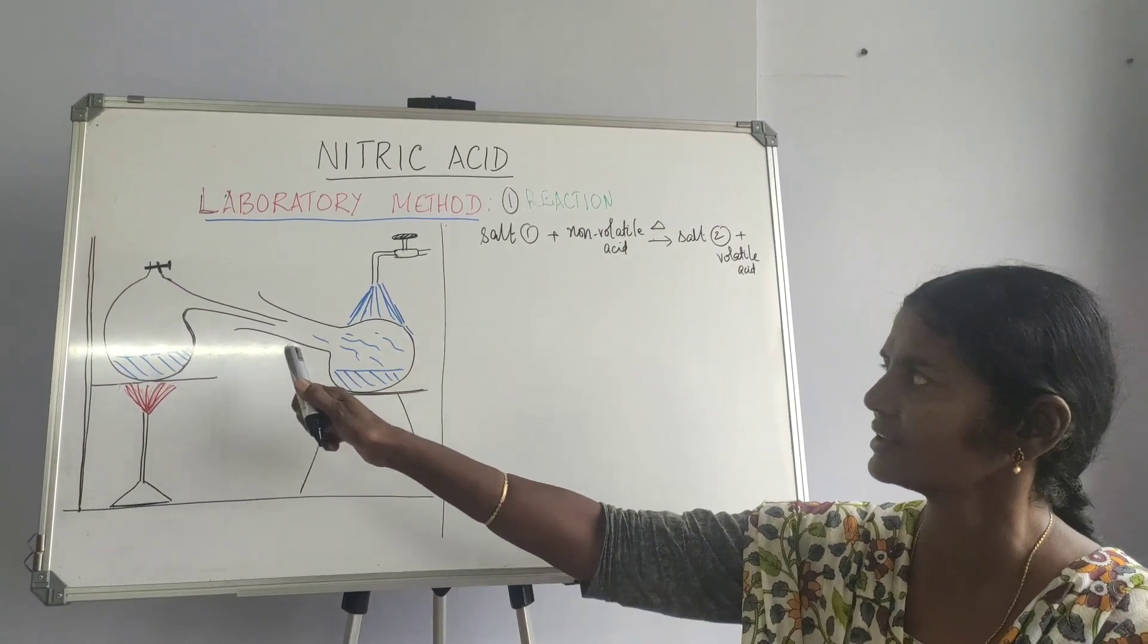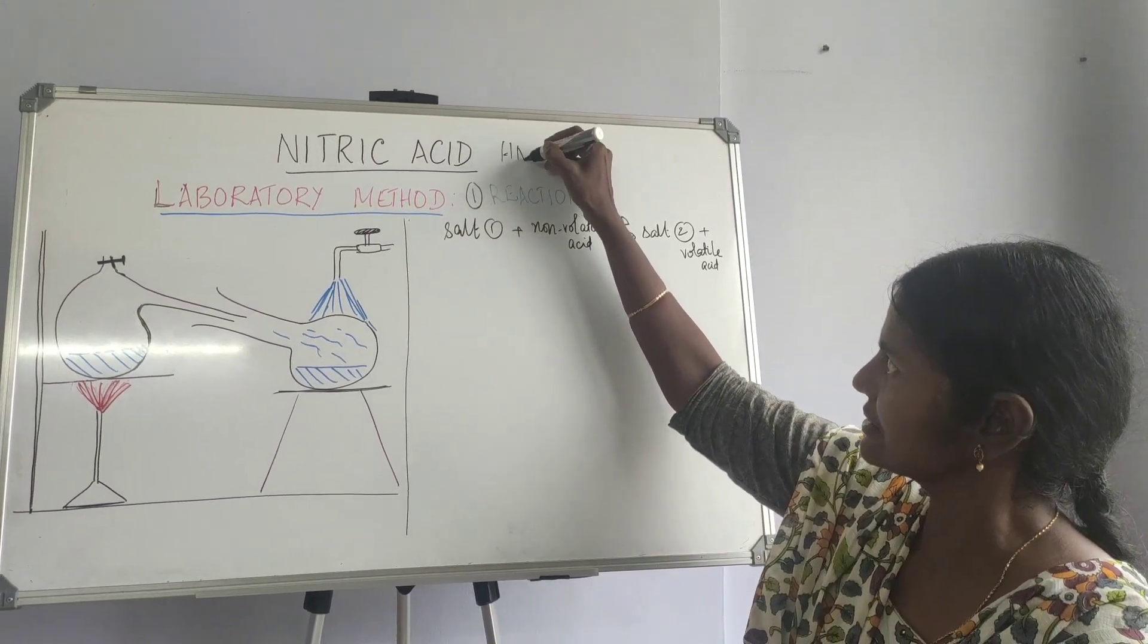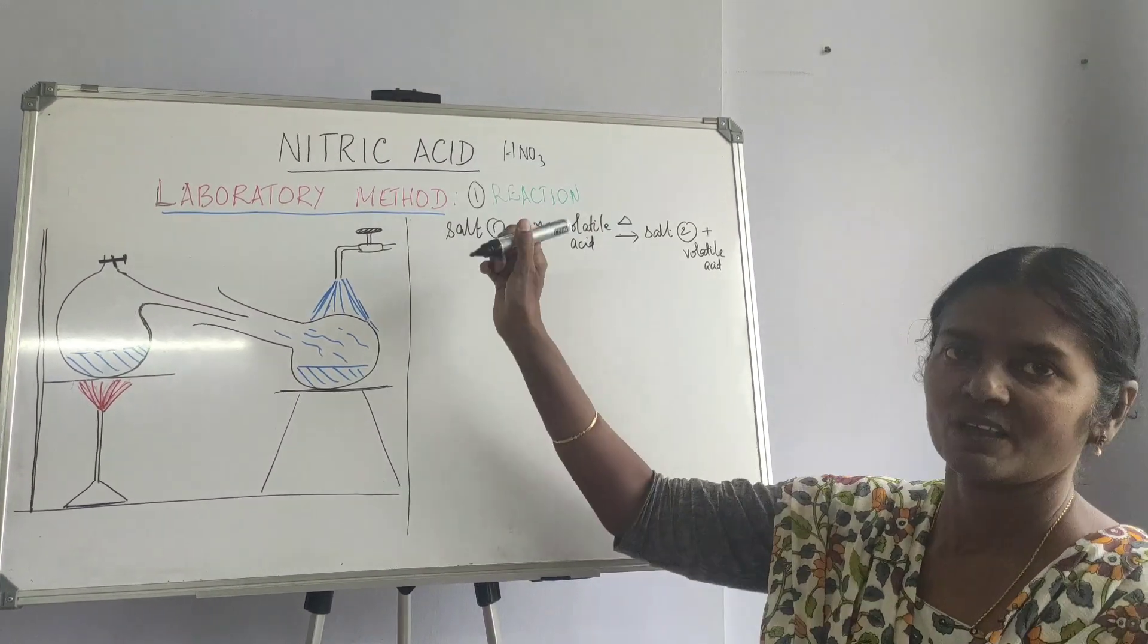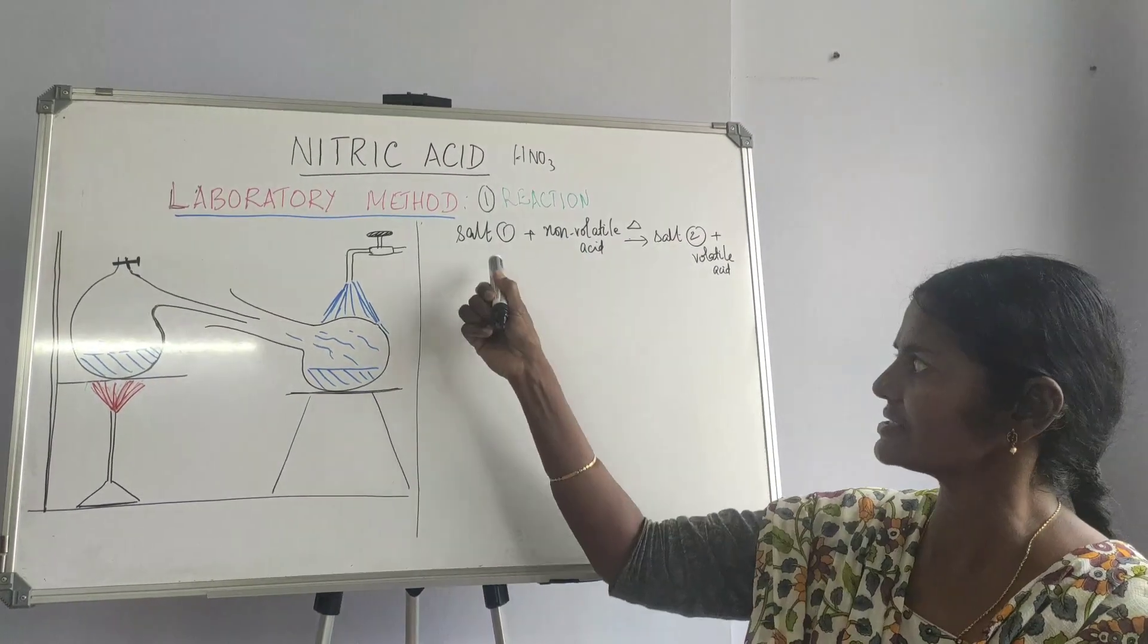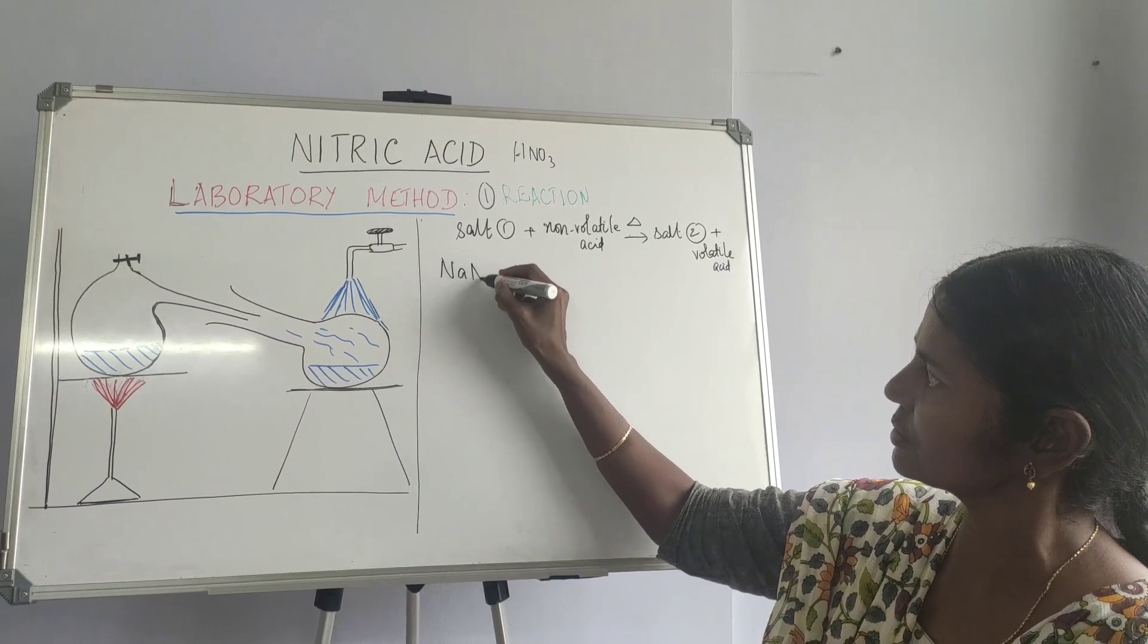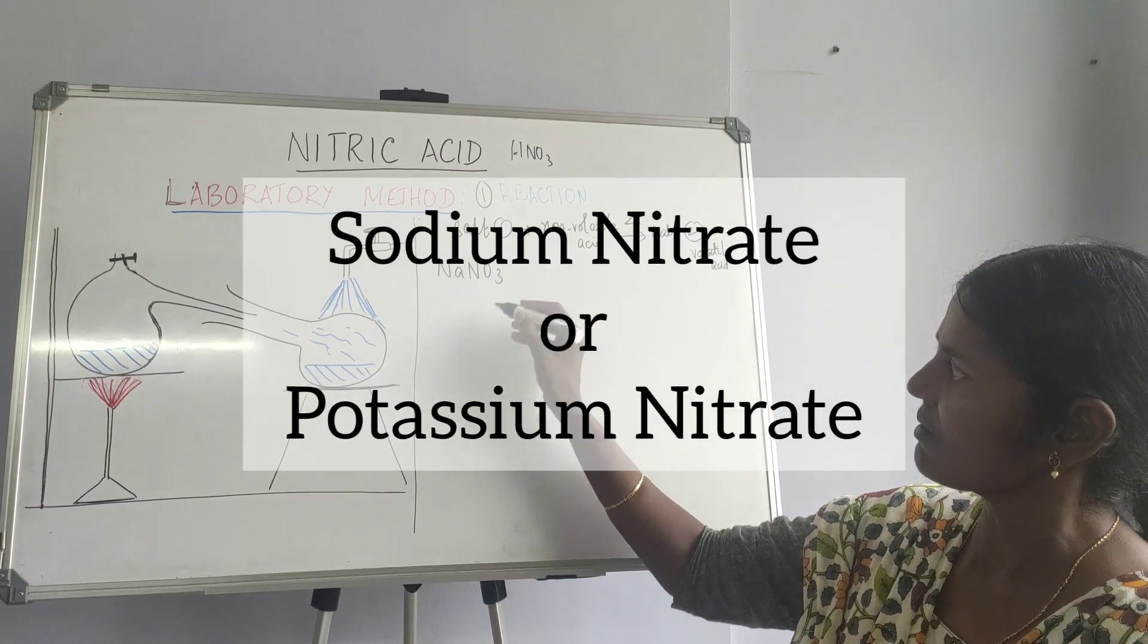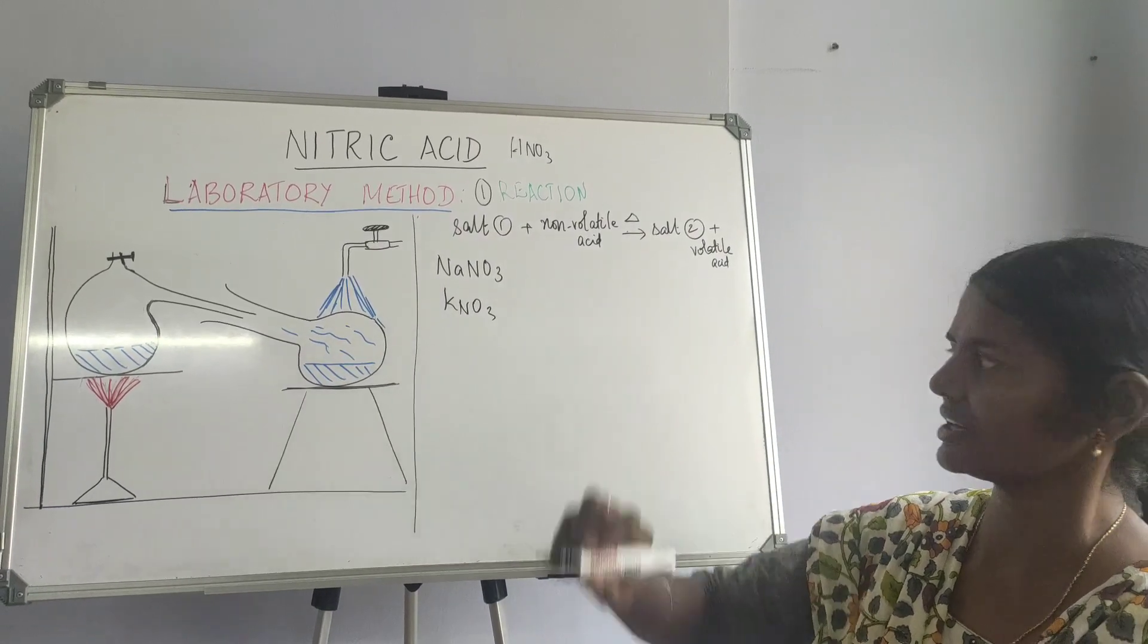In this case, we need nitric acid. The formula for nitric acid is HNO3. Naturally, if we need a nitrate, the salt that we need to use would be either sodium nitrate or potassium nitrate. So these are the two salts that we can use.